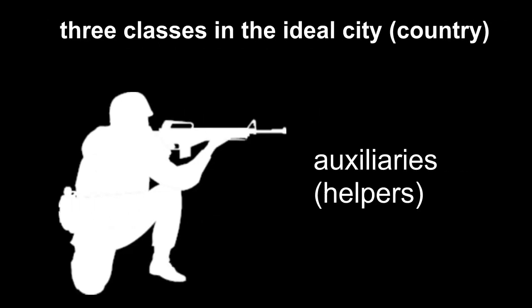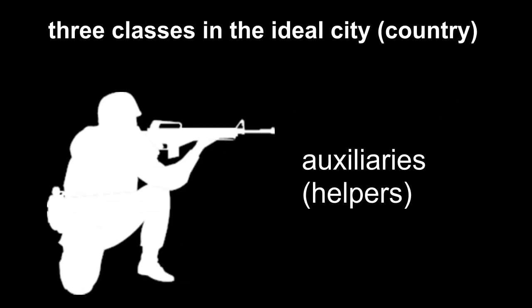A much smaller class is what he calls the auxiliaries, or the helpers. These are basically a soldier and police class. And they're prepared to use force if need be, but only in the way that the rulers say. We'll get to the rulers in a second. The distinguishing feature of the helpers is that they must be courageous. Plato uses the term spirited. They must be kind to friends, tough on enemies, strong and quick, etc. They have to be able to fight. They have to be loyal. Most people are not cut out to be auxiliaries, but some are, and those people within a society should be functioning basically as soldier or police.